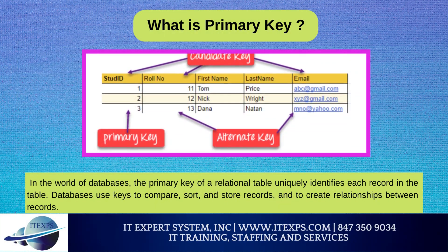What is a primary key? In the world of databases, the primary key of a relational table uniquely identifies each record in the table. Databases use keys to compare, sort, and store records, and to create relationships between records. Choosing the primary key is one of the most important steps in the process. It can be a normal attribute that is guaranteed to be unique, such as a social security number, or it can be generated by the DBMS, such as a globally unique identifier (GUID) in Microsoft SQL Server. Primary keys may consist of a single attribute or multiple attributes in combination, and must be entered when a record is created and should never be changed.